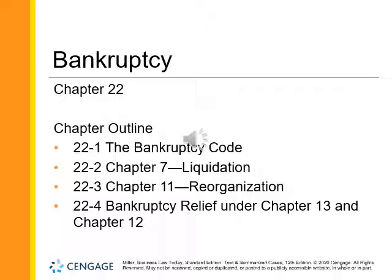Good morning, everybody. Chapter 22 of Miller. Chapter outline. Bankruptcy Code: Chapter 7, liquidation; Chapter 11, reorganization; bankruptcy relief under Chapter 13 and Chapter 12.